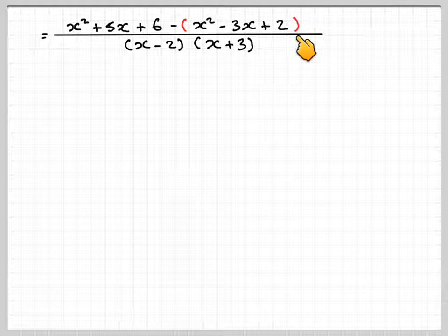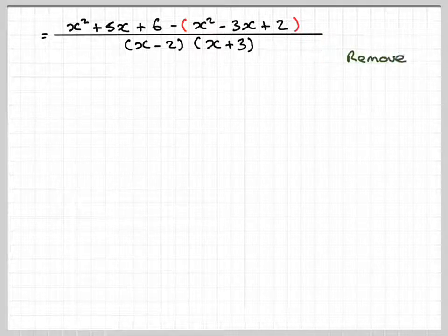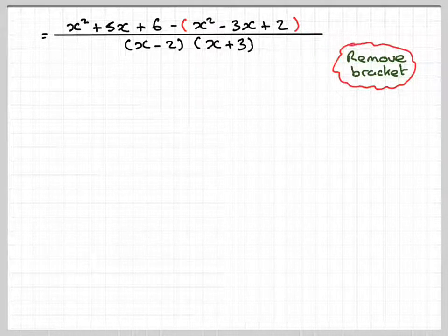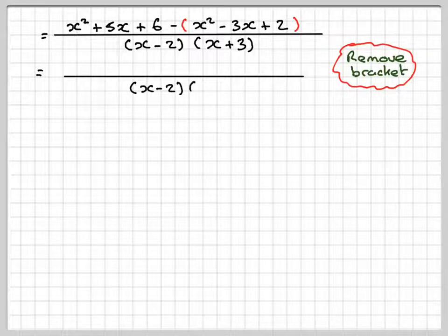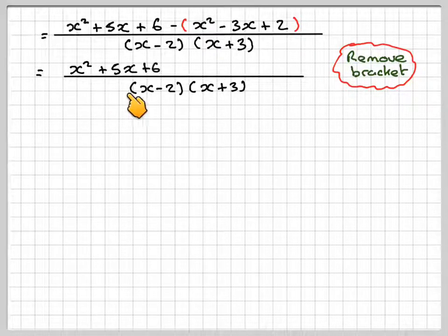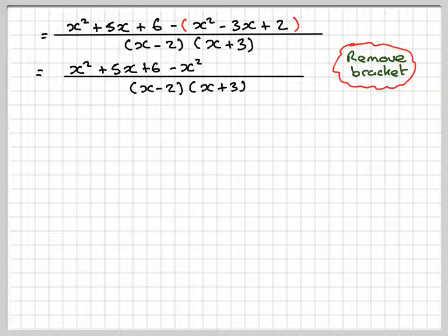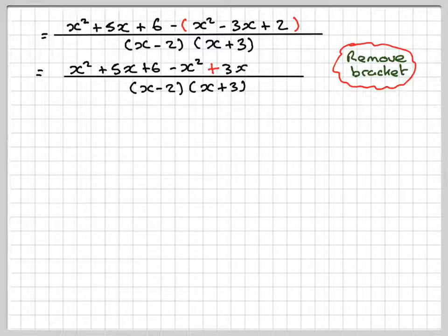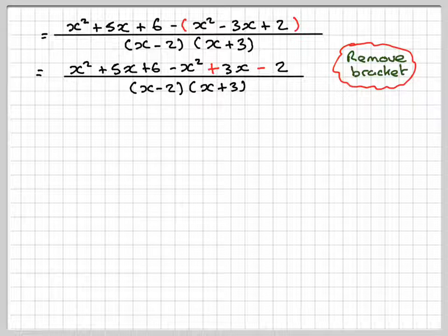Right, we're going to now remove this last bracket here. So we're going to get the common denominator. And we've got x squared plus 5x plus 6 minus x squared plus 3x minus 2.